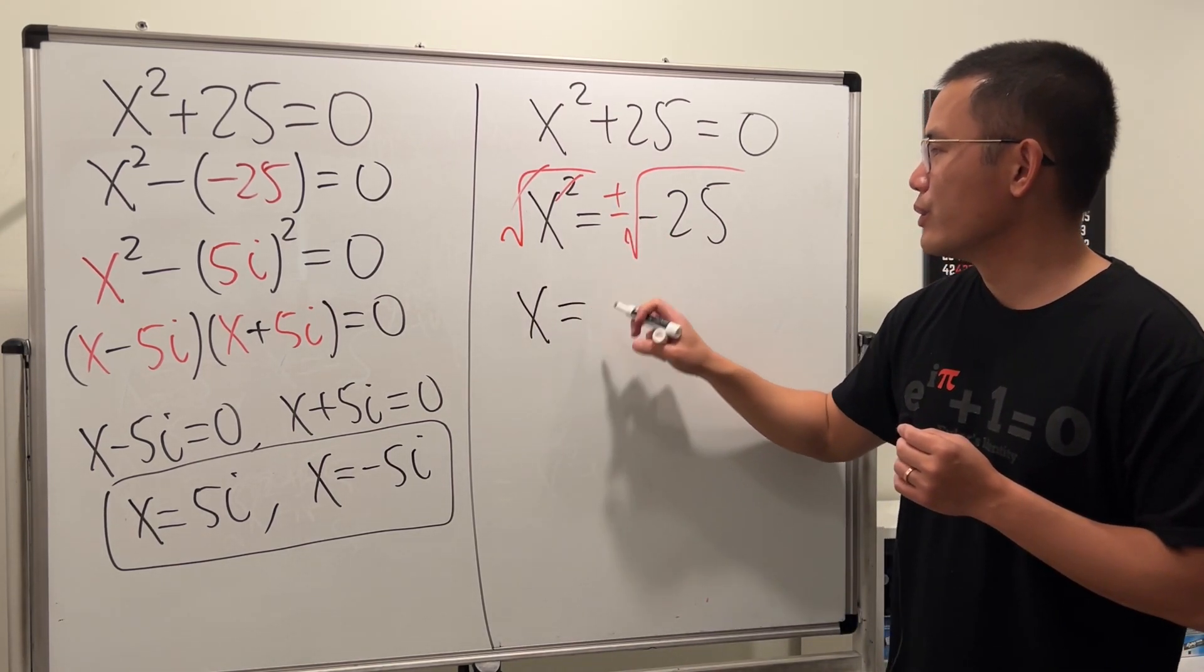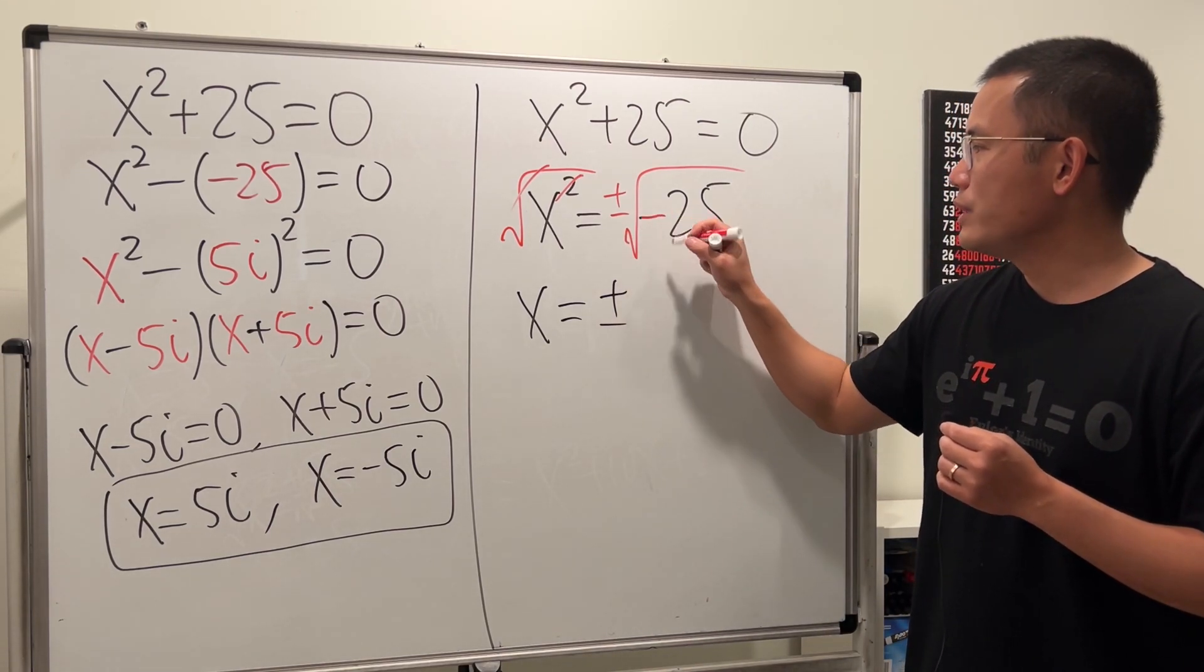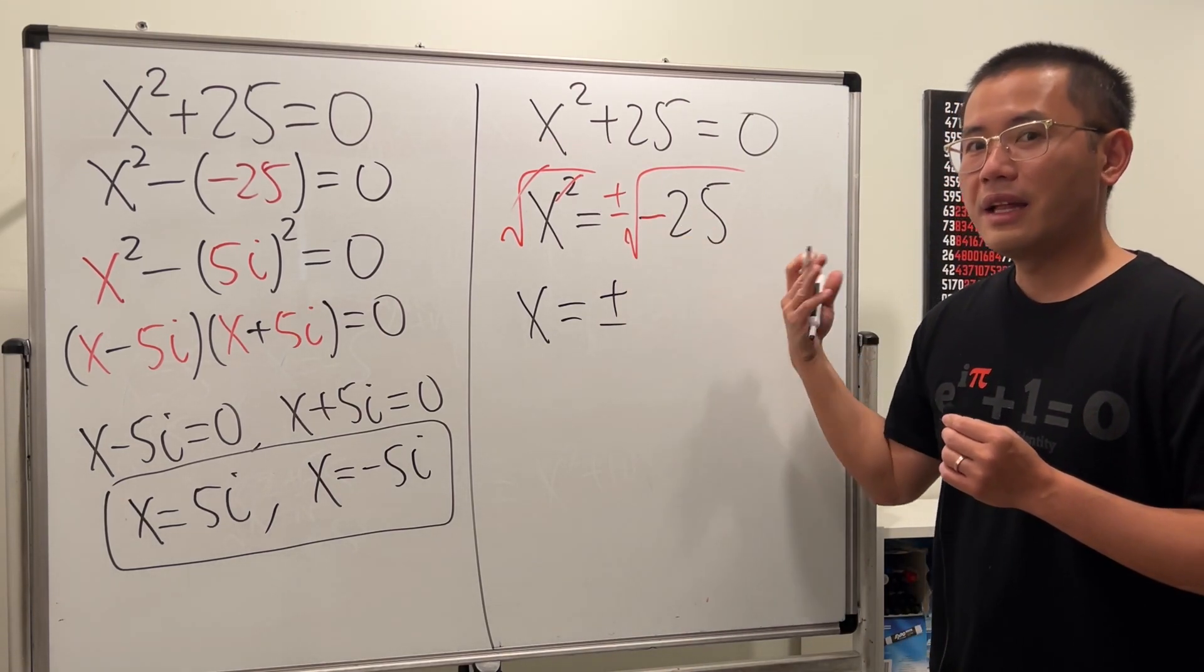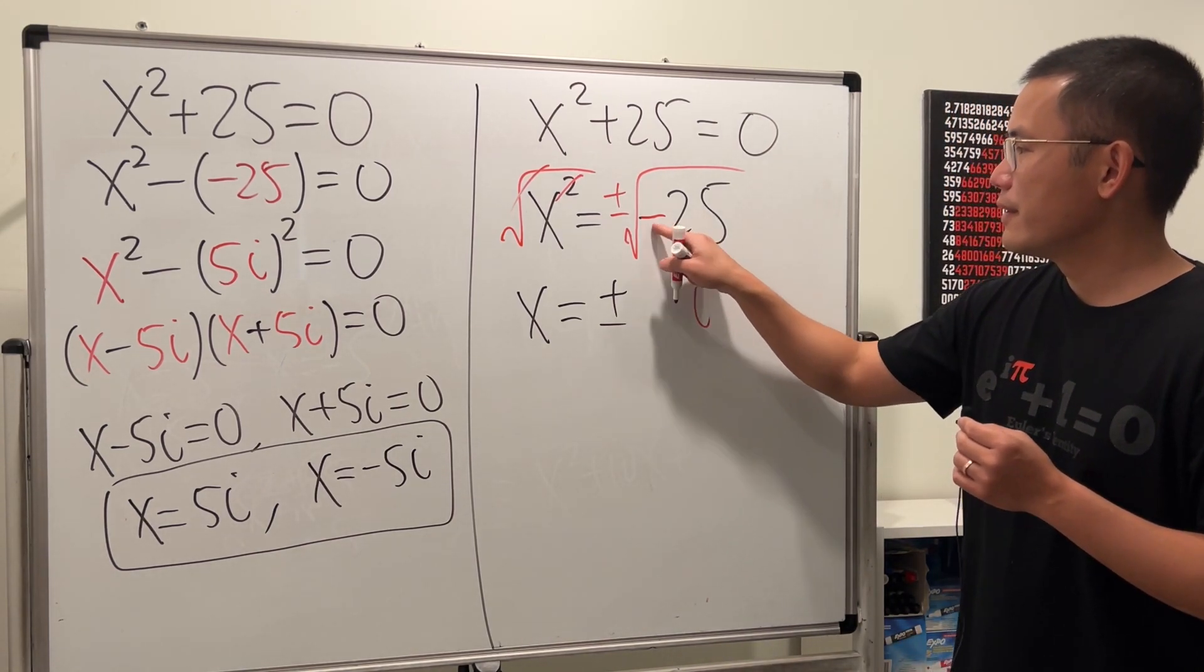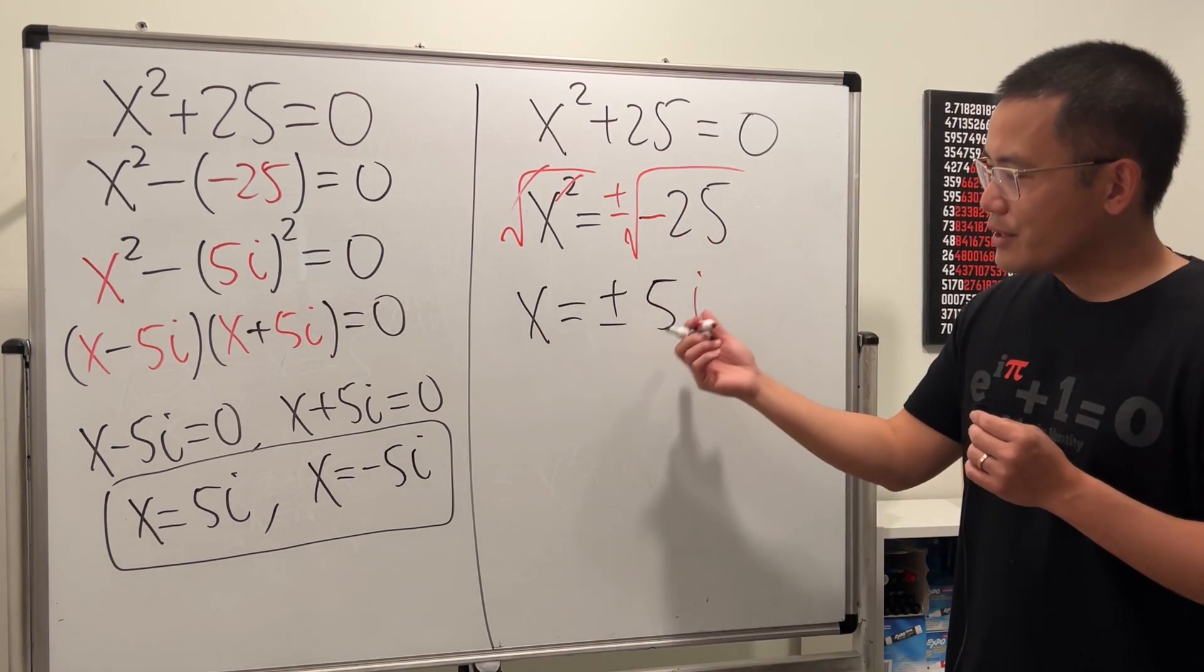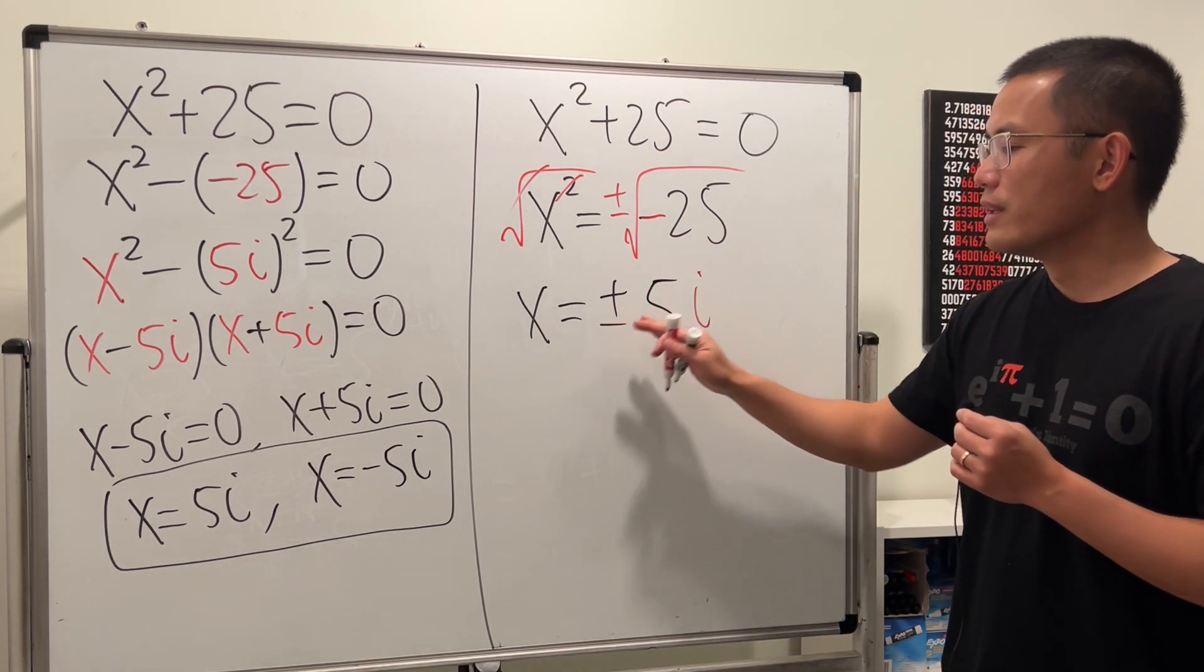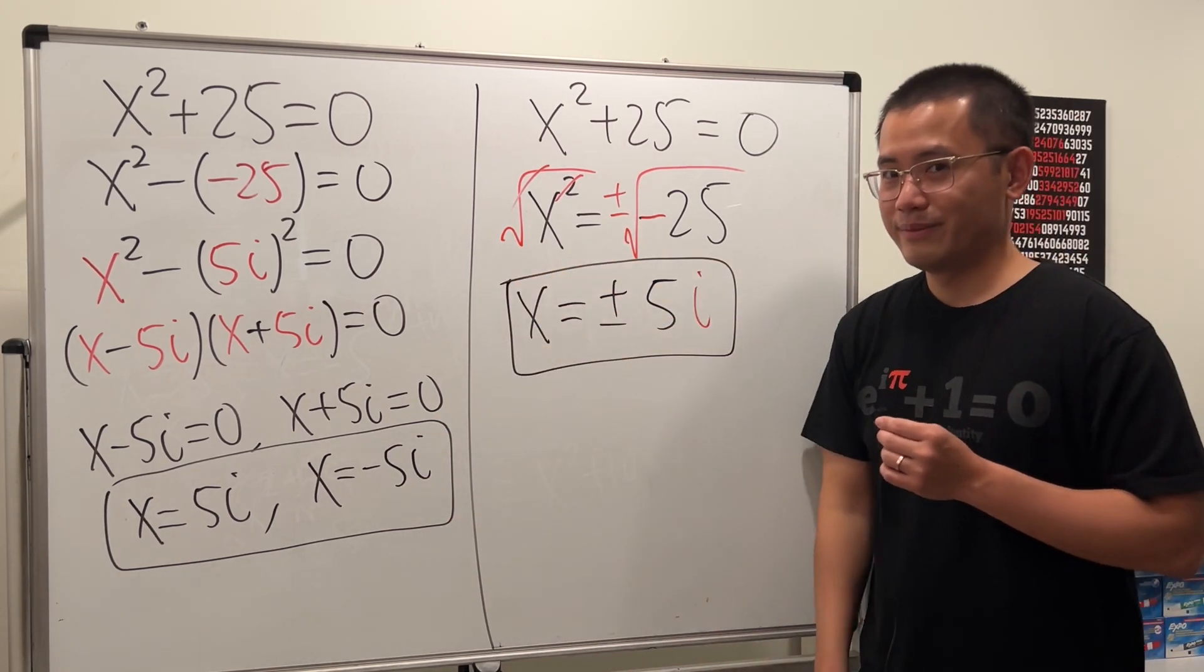Anyways, x is equal to - we have both ± here's the deal. When we see a square root of negative, that's the time that we are going to use the imaginary unit i. And the square root of 25 is 5. So we have two answers: 5i or -5i, just like what we have over there. So that's it.